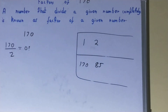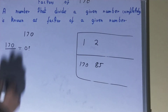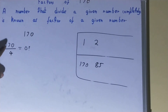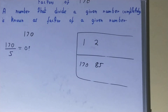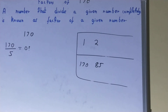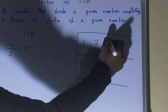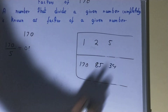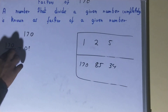After 2, we try 3 — 3 cannot divide 170. Then 4 — 4 also cannot divide 170. Then 5 — yes, 5 can divide 170, so 5 is a factor. 5 times 34 equals 170, so 34 is also a factor.